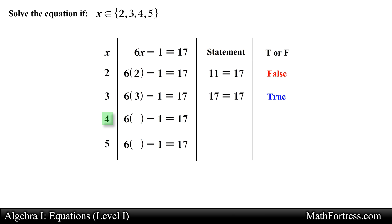The third element is 4. So substituting it into the equation yields the statement 23 is equal to 17, which is false. Now the final element of the domain is 5. So substituting it into the equation yields the statement 29 is equal to 17, which is false.